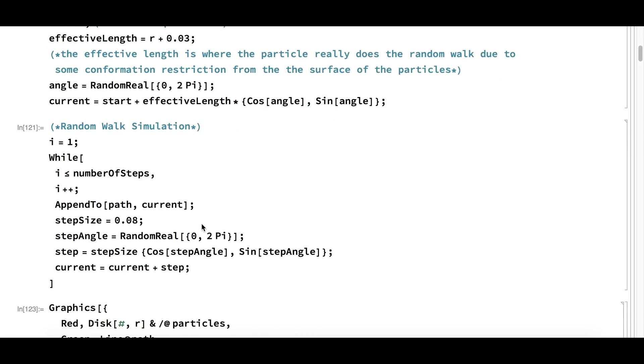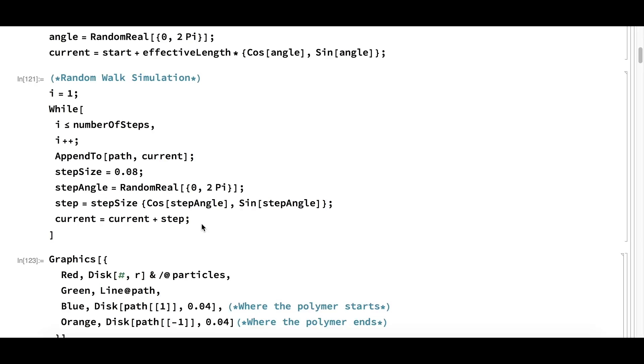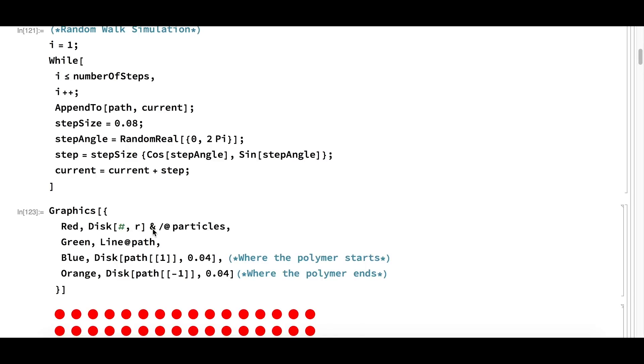In the random walk simulation, the step size is the length of the subunit of the polymer, which is about 10 times smaller than the size of the particle. The step angle tells you the direction that the polymer will walk. The step tells you how much the polymer will walk in the x and y direction. The next position of the polymer will be the current position plus the step. Each time the new polymer position is computed, it is stored inside a list which we call path.